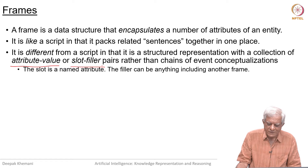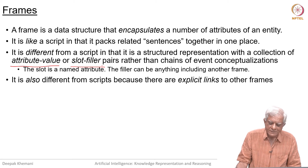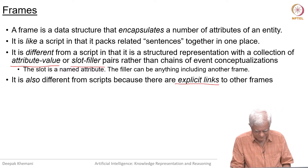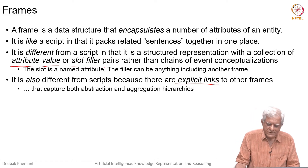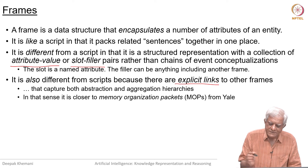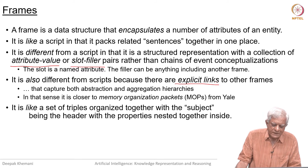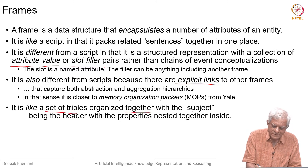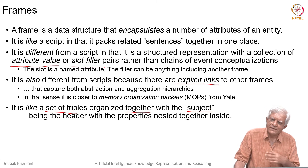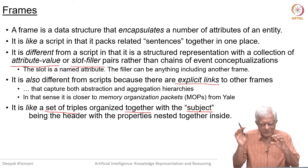The slot in a frame is a named attribute; the filler can be anything and it can also be another frame. It is also different from scripts because there are explicit links to other frames — in that sense it captures the flavor of semantic networks, which capture both abstraction and aggregation hierarchies. It is also like a set of triples organized together under one subject. We saw this idea even when looking at RDF — you could have a representation where the subject is followed by many properties and many values.